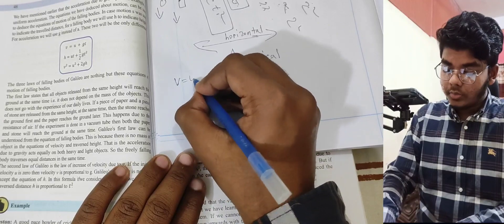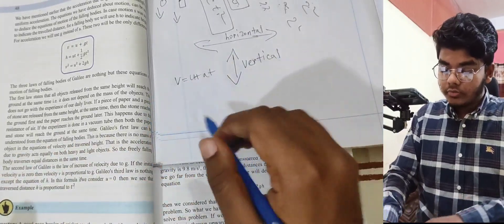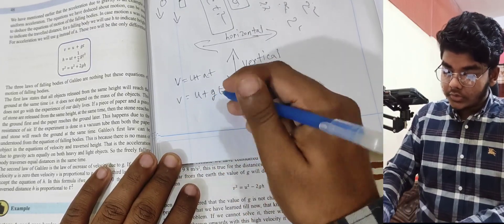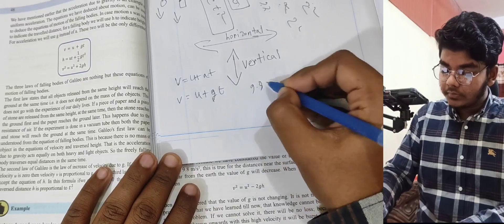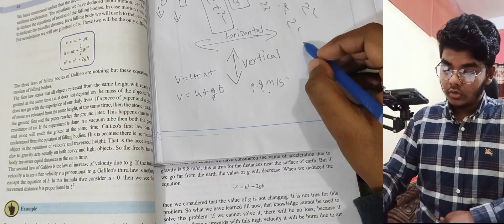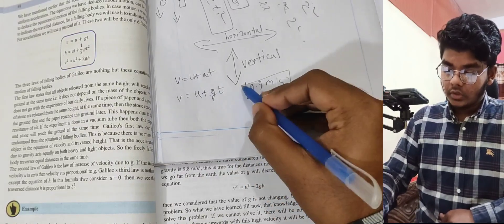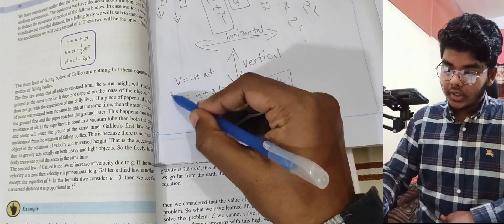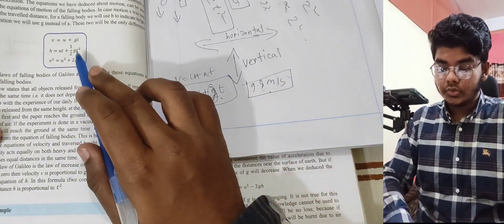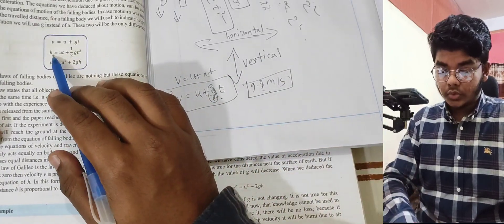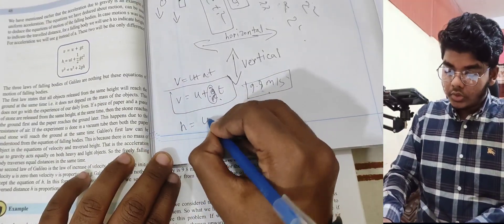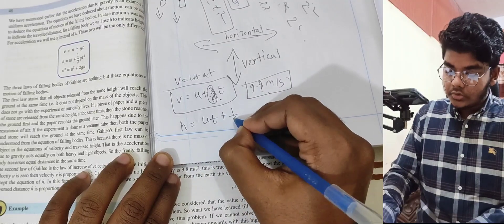Using v = u + at, with acceleration due to gravity g = 9.8 m/s², the equation becomes v = u + gt. For displacement: h = ut + ½gt².